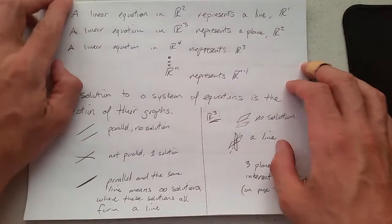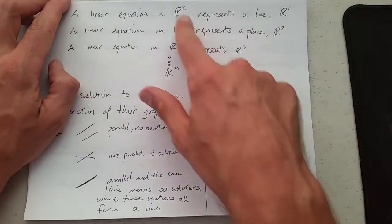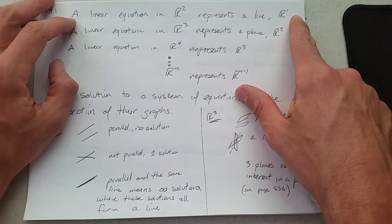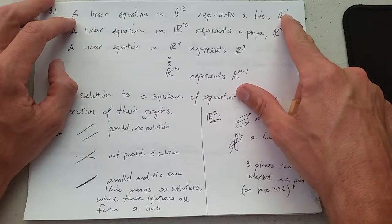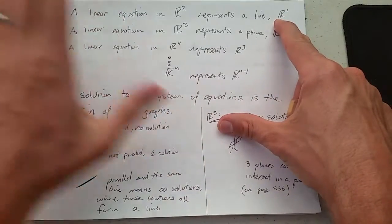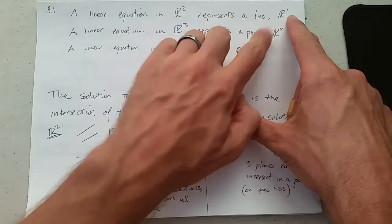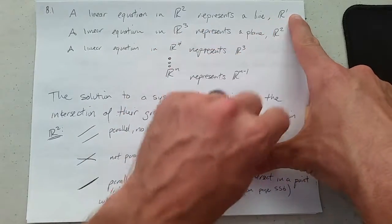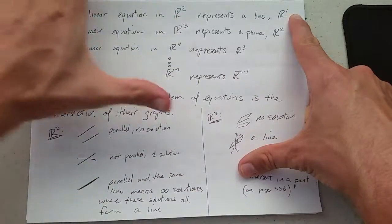We just saw a linear system in two dimensions, and one linear equation in two dimensions represents a line. A line is a one-dimensional object, so you could think of that as a line embedded in a plane, basically a number line embedded in a plane.